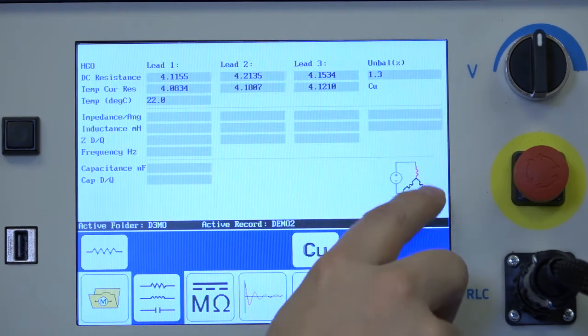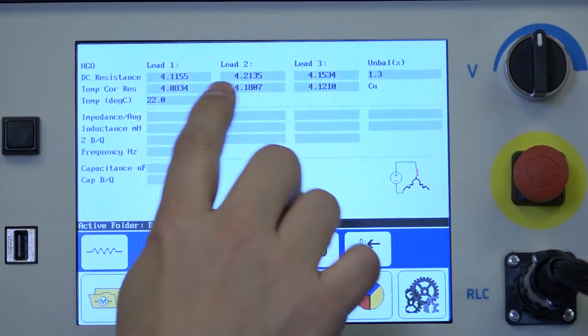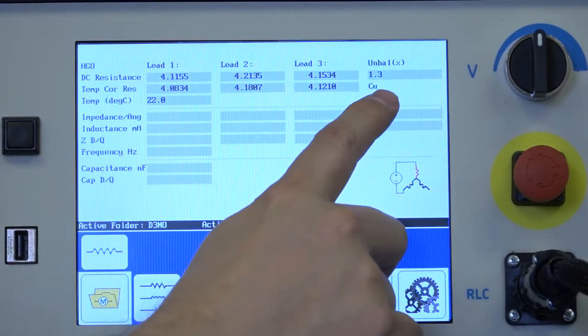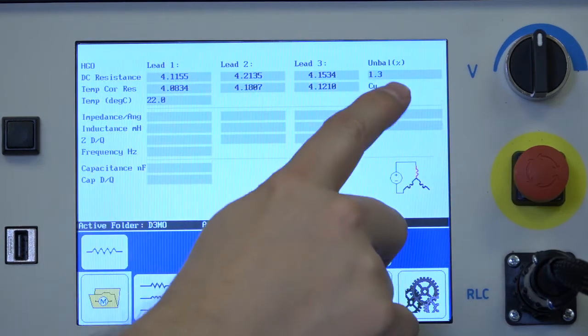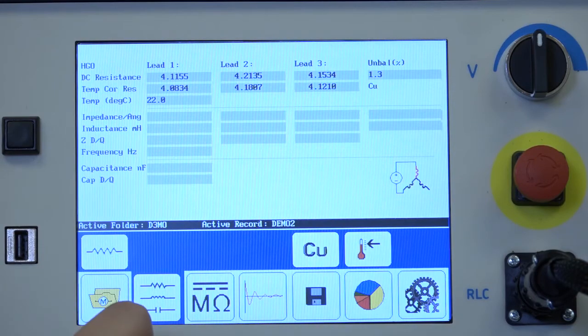The other option is hot ground ground. That can be selected in the user settings as well. Resistance testing is completed. We want to be mindful of the unbalanced percentage. If that is out of our tolerance we need to make note of that.